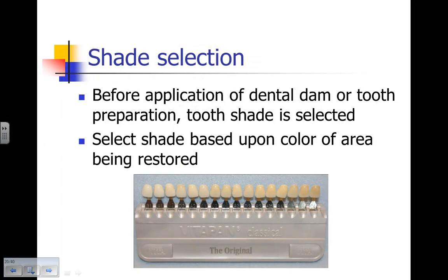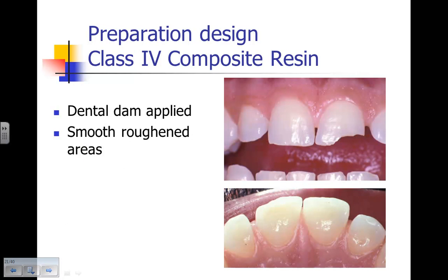As with any composite, before applying the dental dam or performing tooth preparation, we select the tooth shade. The shade is based upon the color of the area being restored — in this case, the incisal two-thirds of number 9 — using a Vita shade guide. The dental dam is then applied and we smooth any roughened areas and remove any sharp angled areas of the tooth.